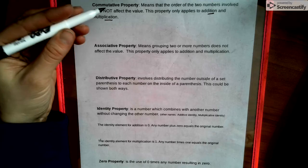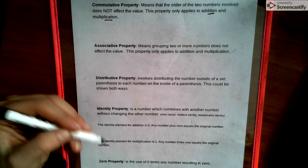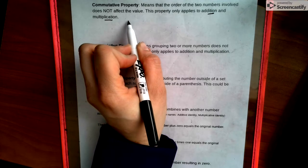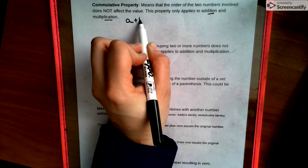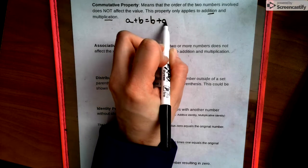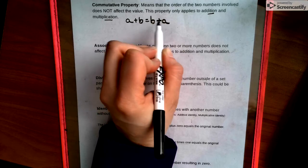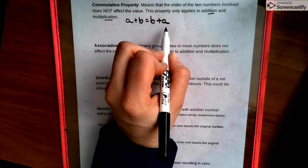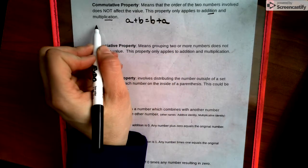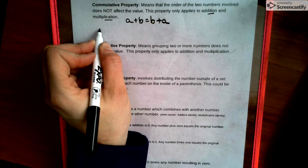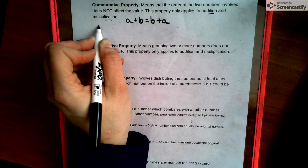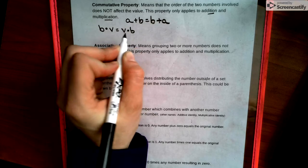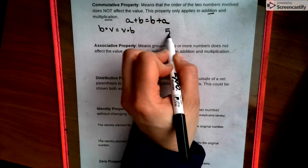So an example of commutative property with variables would be like a plus b equals b plus a. This does not change, and as you can see all we're doing is changing the order of the two letters. Now what it would look like with multiplication could be something like a times b equals b times a, and another example would be with numbers like